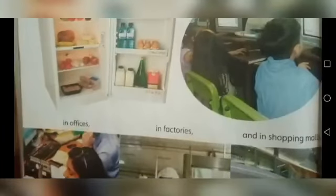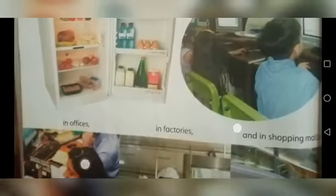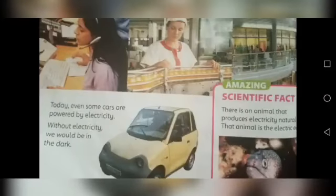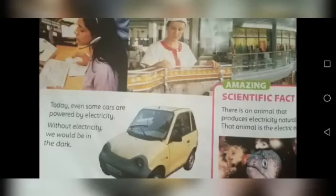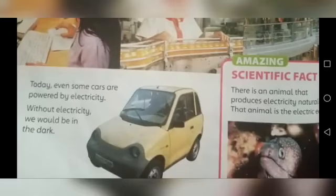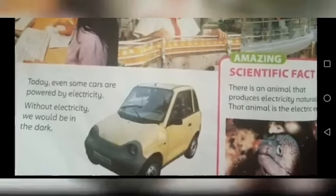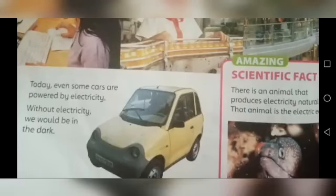Page 68: ہمیں بجلی کس کس چیز کے لیے ضرورت ہوتی ہے. Today we use electricity at home - fridge، lights، پنکھے، AC، oven چلتے ہیں. گھر، office، factory، shopping malls اور schools سب بجلی پر منحصر ہیں. Today even some cars are powered by electricity. Without electricity we would be in the dark.